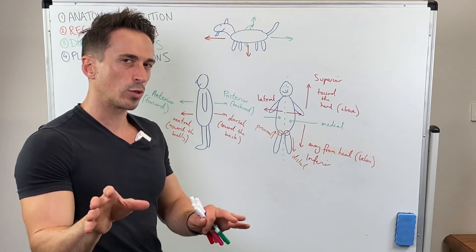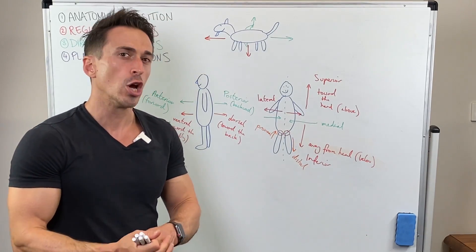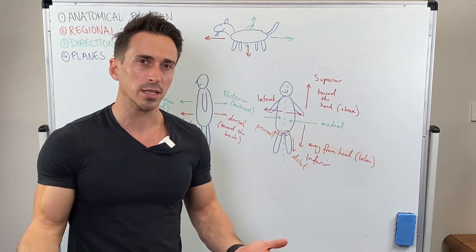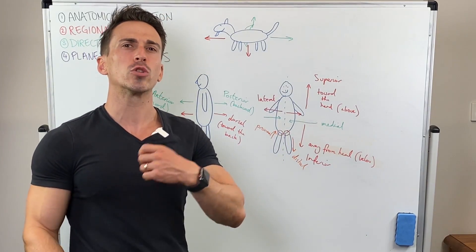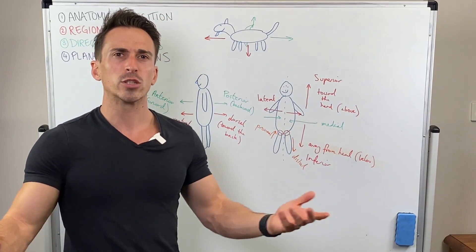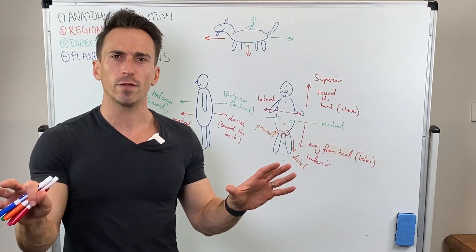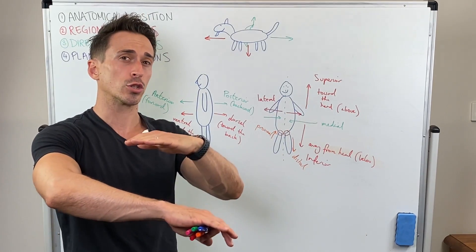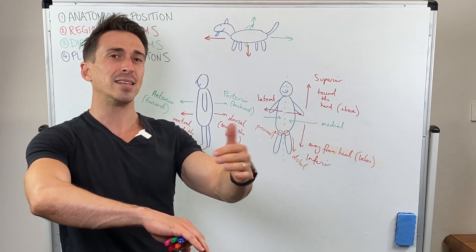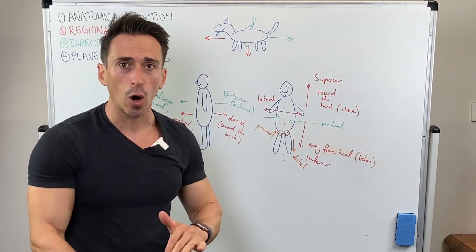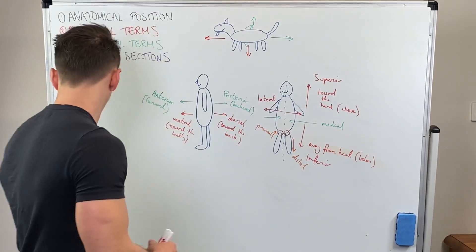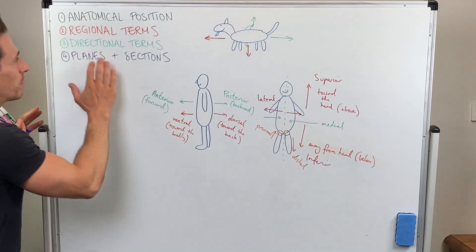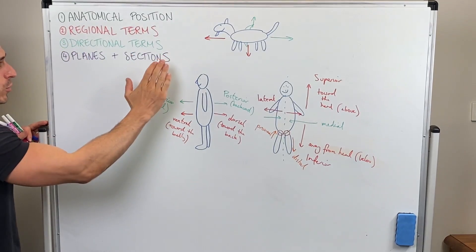The last directional term is superficial and deep. Superficial means closer to the surface — it's all about the surface. And deep means away from the surface. So there we've done our directional terms.